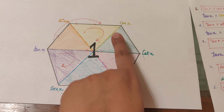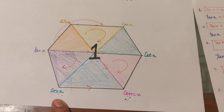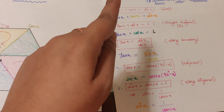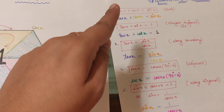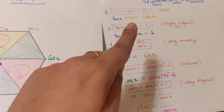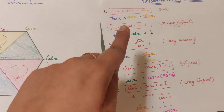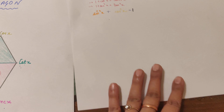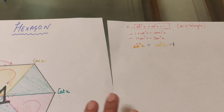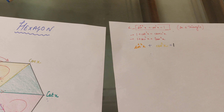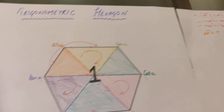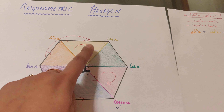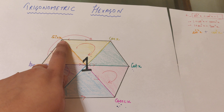The fourth identity involves adjacent trigonometric ratios: sec x = csc(90 - x). Similarly, tan x = cot(90 - x) and sin x = cos(90 - x). These are obtained from the parallel lines in the hexagon.